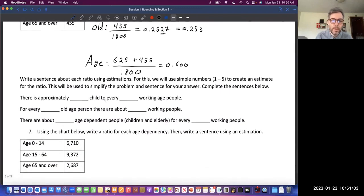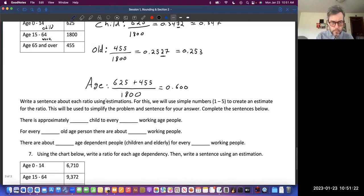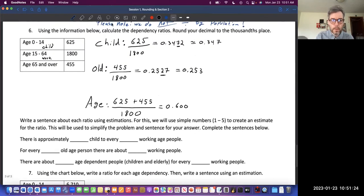Write a sentence about each ratio using estimations. For this, we will use the simple numbers 1 through 5 to create an estimate. This will be used to simplify the problem and sentence. For your answer, complete the sentences below. There are approximately blank children for every blank working age people.